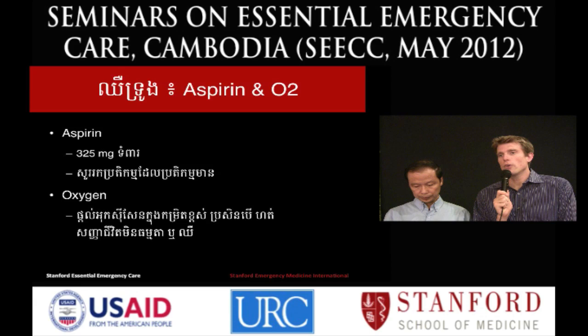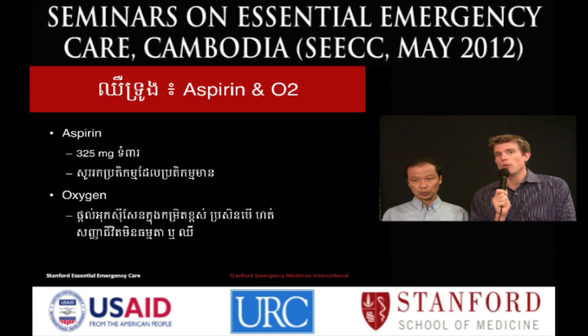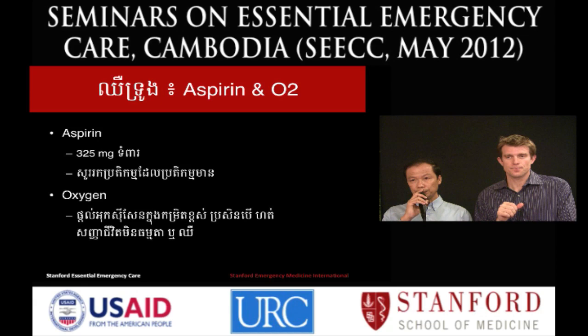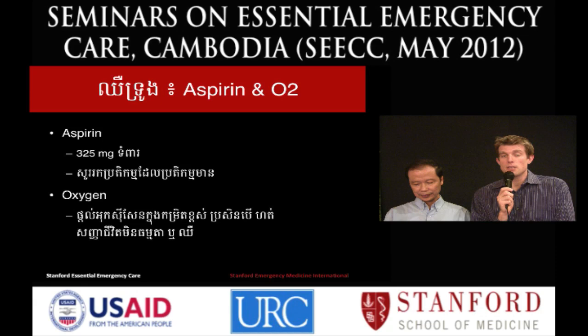So what are we going to do for our patients when we think they might be having a heart attack or acute coronary syndrome? Almost all patients should get aspirin — we give at least 325 milligrams to most patients. Oxygen should be given if the patient has symptoms of shortness of breath or has abnormal vital signs such as low oxygen saturation.